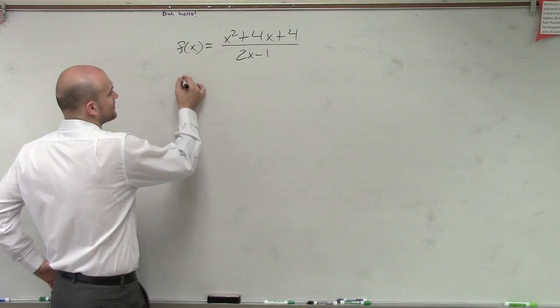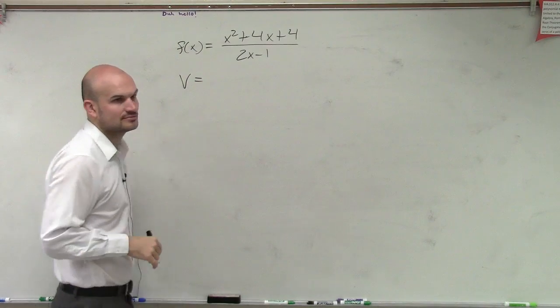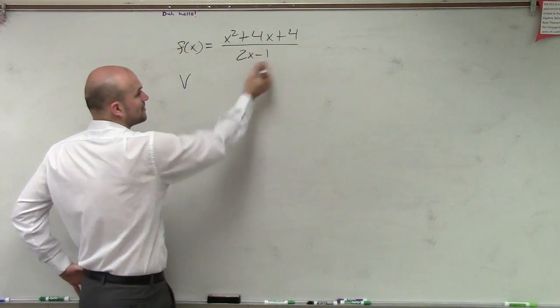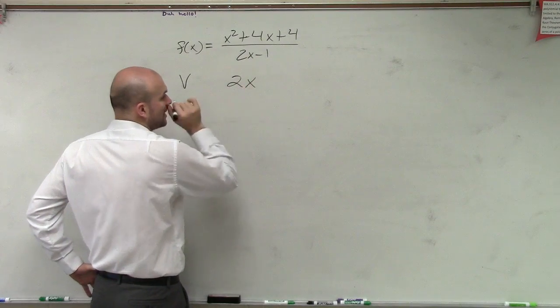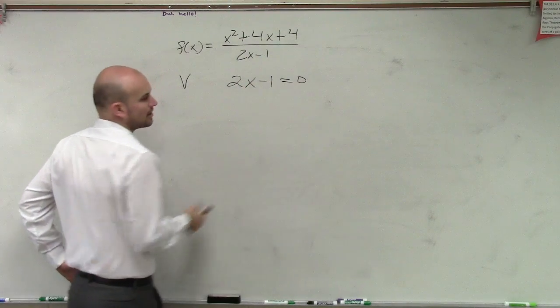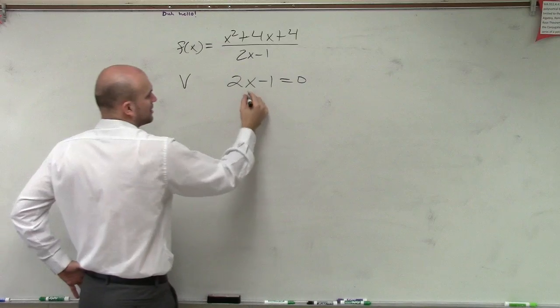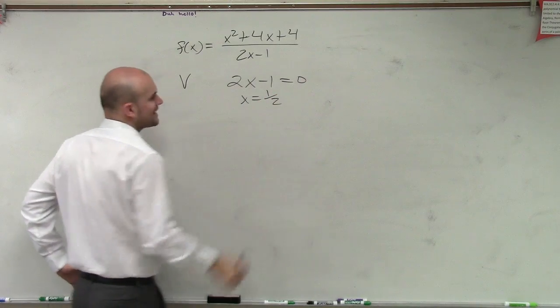The first thing I like to do, find the vertical. So find the vertical asymptote. The vertical asymptote is when our denominator polynomial equals zero. Without doing all my work, I'm going to get this a little bit faster. x equals 1 half.